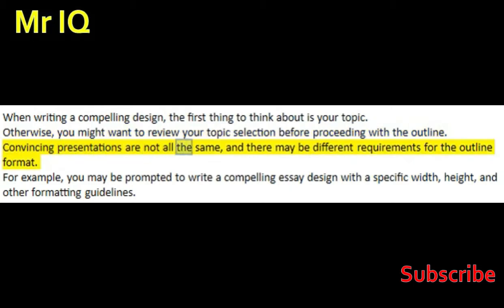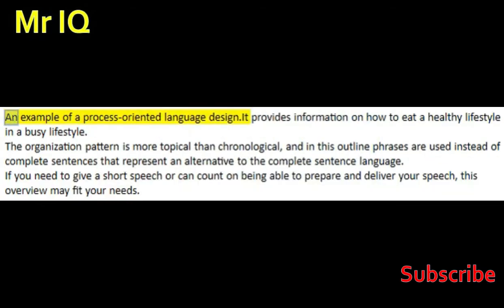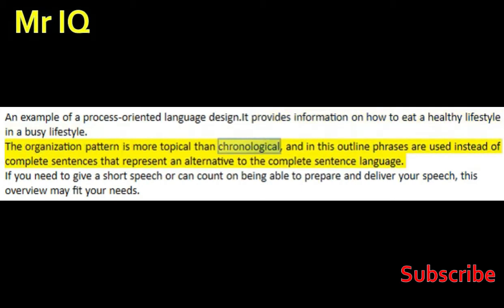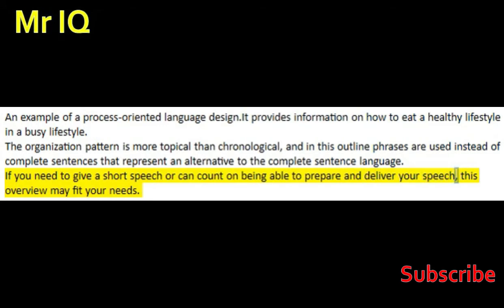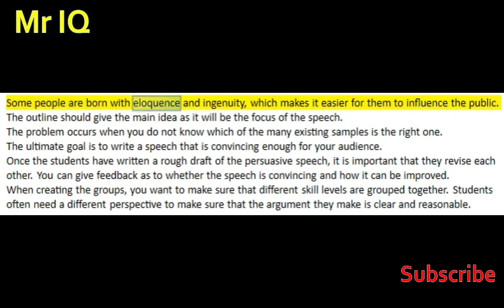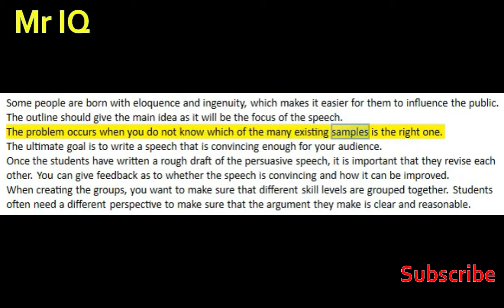Convincing presentations are not all the same, and there may be different requirements for the outline format. For example, you may be prompted to write a compelling essay design with a specific width, height, and other formatting guidelines. An example of a process-oriented language design provides information on how to eat a healthy lifestyle in a busy lifestyle. The organization pattern is more topical than chronological, and in this outline, phrases are used instead of complete sentences. If you need to give a short speech, this overview may fit your needs. Some people are born with eloquence and ingenuity, which makes it easier for them to influence the public. The outline should give the main idea as it will be the focus of the speech. The ultimate goal is to write a speech that is convincing enough for your audience.